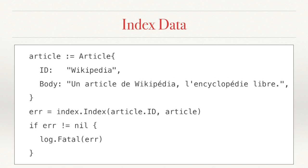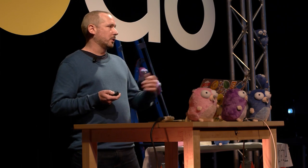Now we're ready to index some data. I've got a Go structure here called article with two fields, ID and body — they're both strings. I'm going to set the first one to Wikipedia and the second one to the sentence that we looked at earlier. Then we use the index method to put that into the index. The first argument is the ID, and the second argument is the whole structure that we want to put into the index. And so at the end of the slide, we've actually got data on disk corresponding to the data we indexed.